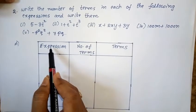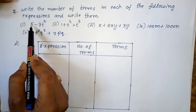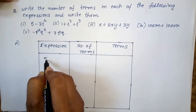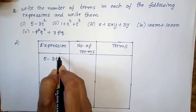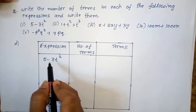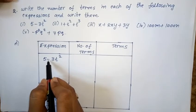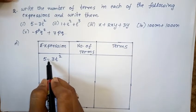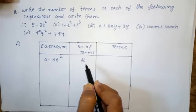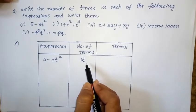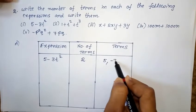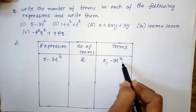First expression: 5 minus 3t². The minus symbol separates it into 2 terms. So total number of terms is 2. The terms are 5 and minus 3t².